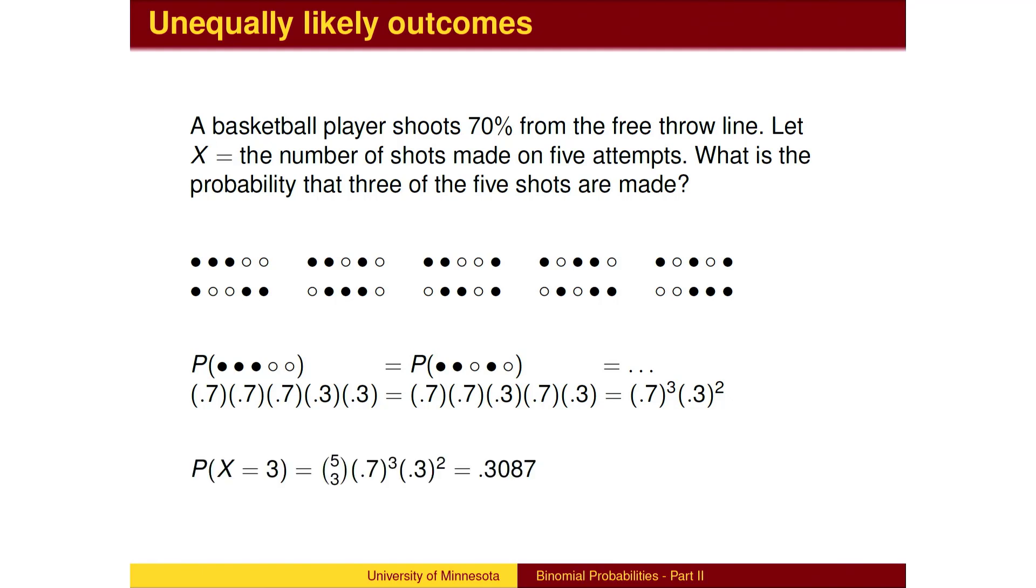There are ten strings in all, so the total probability for getting the first string, or the second string, or the third string, etc., is to add the ten possibilities together. All of which are the same product, so in total we have ten times 0.7 to the third power times 0.3 squared, with the ten coming from Pascal's triangle.